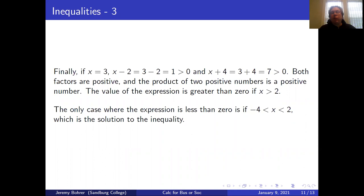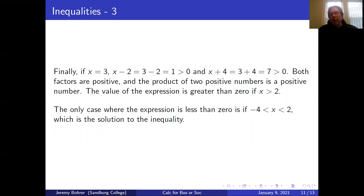Finally, if x = 3: x - 2 = 1 > 0, and x + 4 = 7 > 0. Both factors are positive and the product of two positive numbers is positive, so the expression is greater than zero if x > 2. The only case where the expression is less than zero is -4 < x < 2, which is the solution to our inequality.